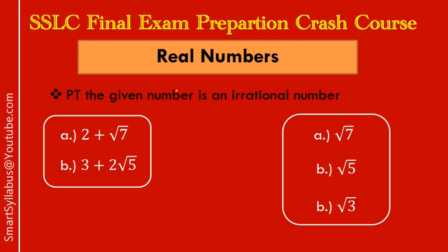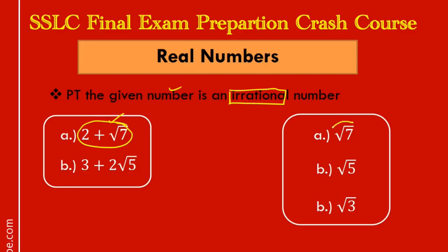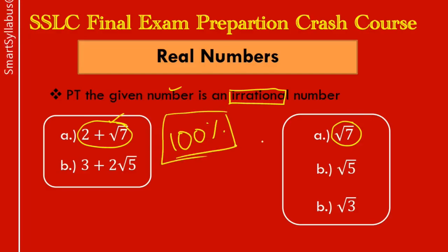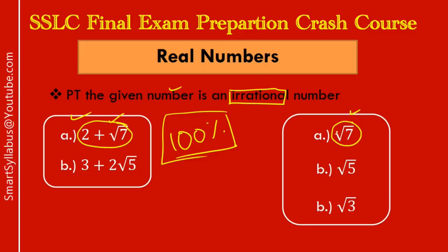Under the category of proving a given number as irrational, there are two types of sums. One is a binomial sum — where two terms are given for you to prove irrational. The other type is a monomial — just a single term. Out of binomial or monomial, one question is 100% sure in your final examination. In the previous video we learned how to prove binomial sums; today we focus on monomial terms and how to prove them irrational.